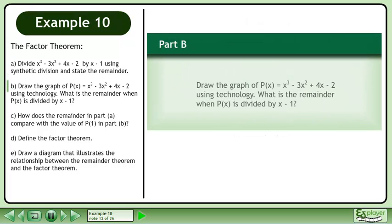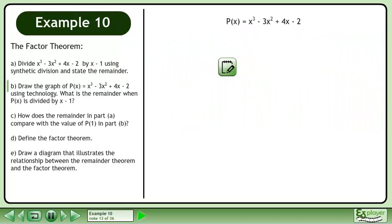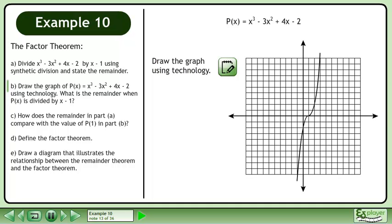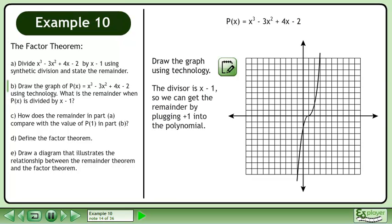Now we'll move on to Part B: draw the graph of p of x equals x-cubed minus 3x-squared plus 4x minus 2 using technology. What is the remainder when p of x is divided by x minus 1? Draw the graph using technology. The divisor is x minus 1, so we can get the remainder by plugging positive 1 into the polynomial.